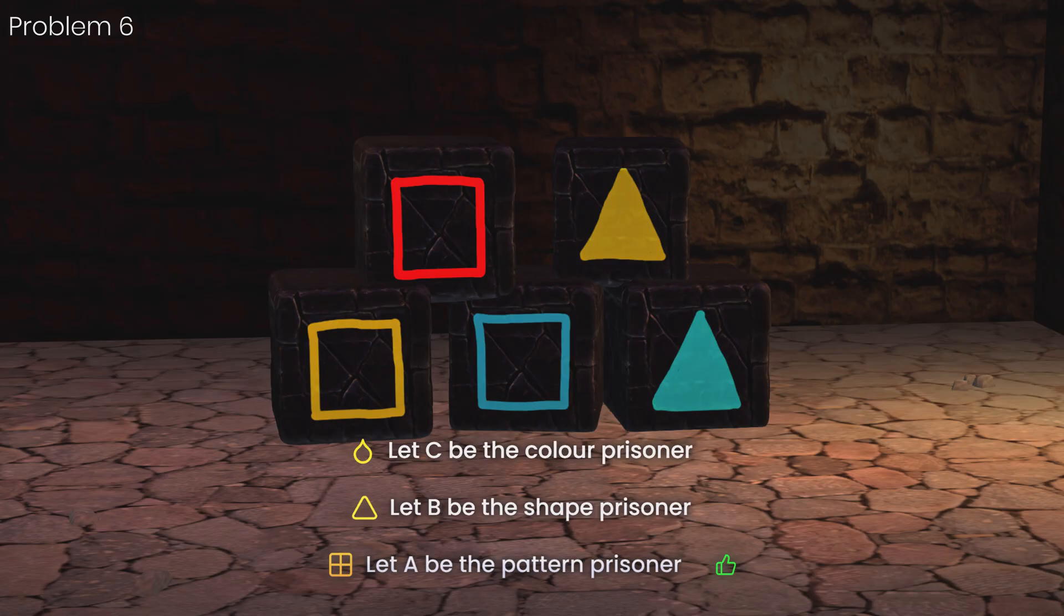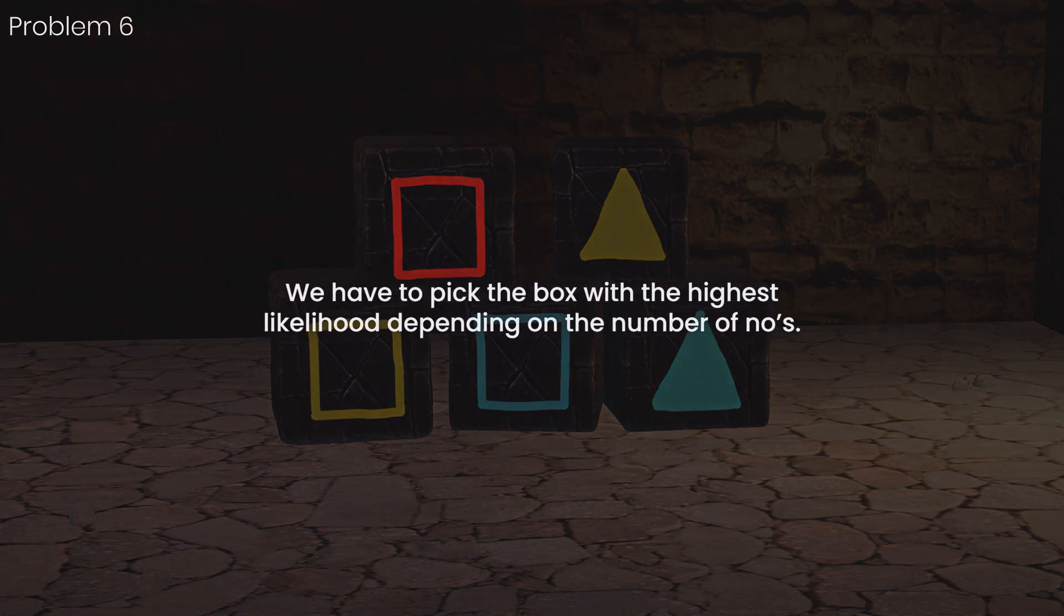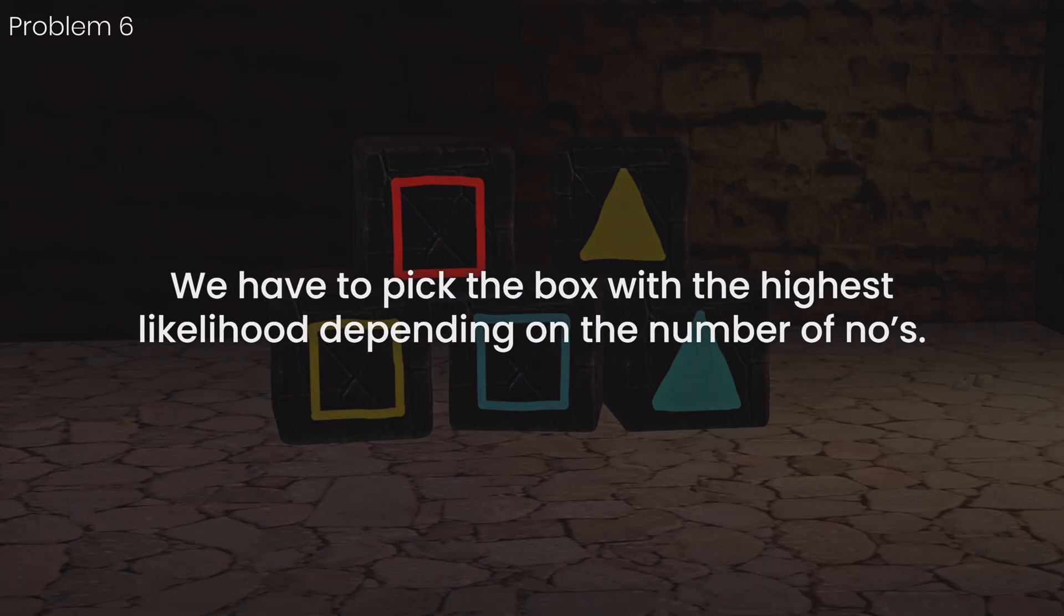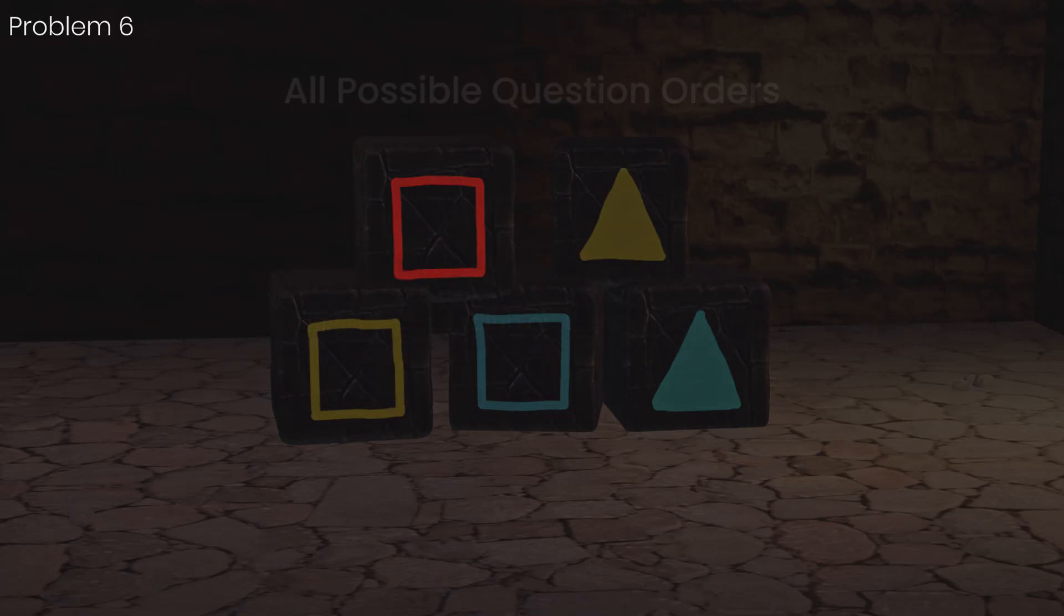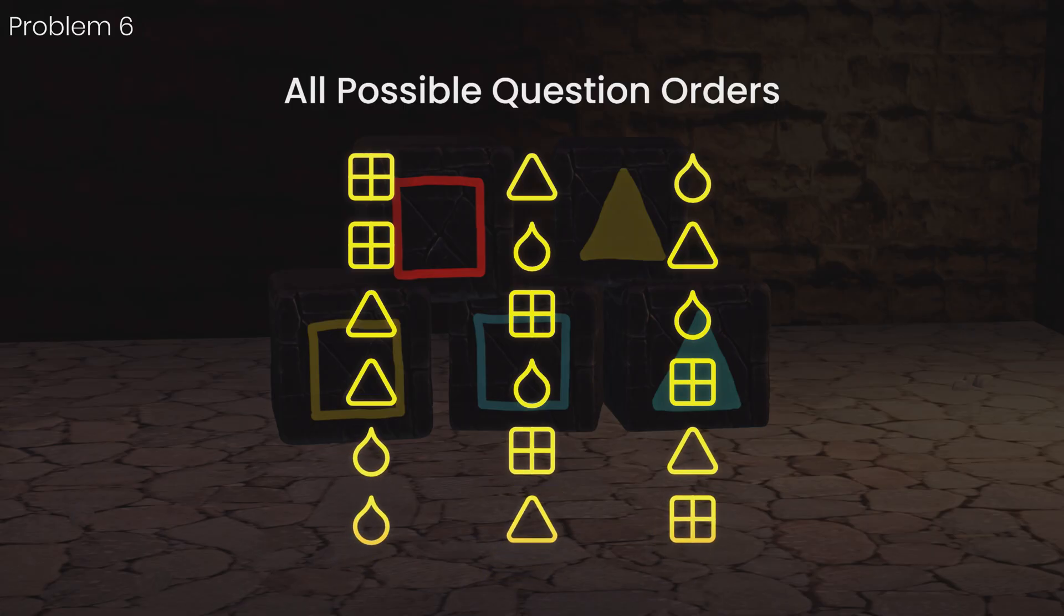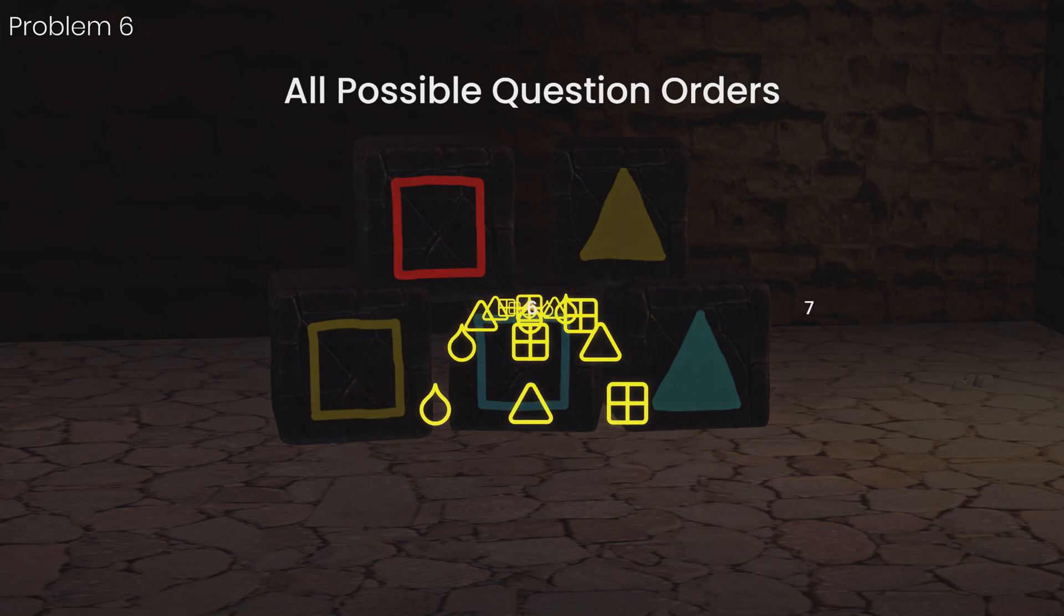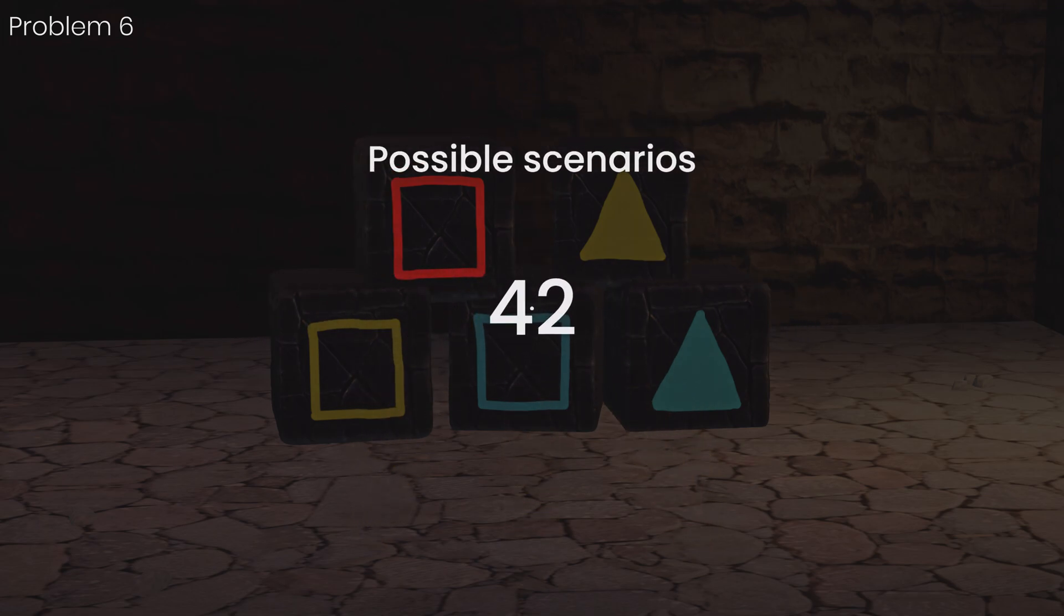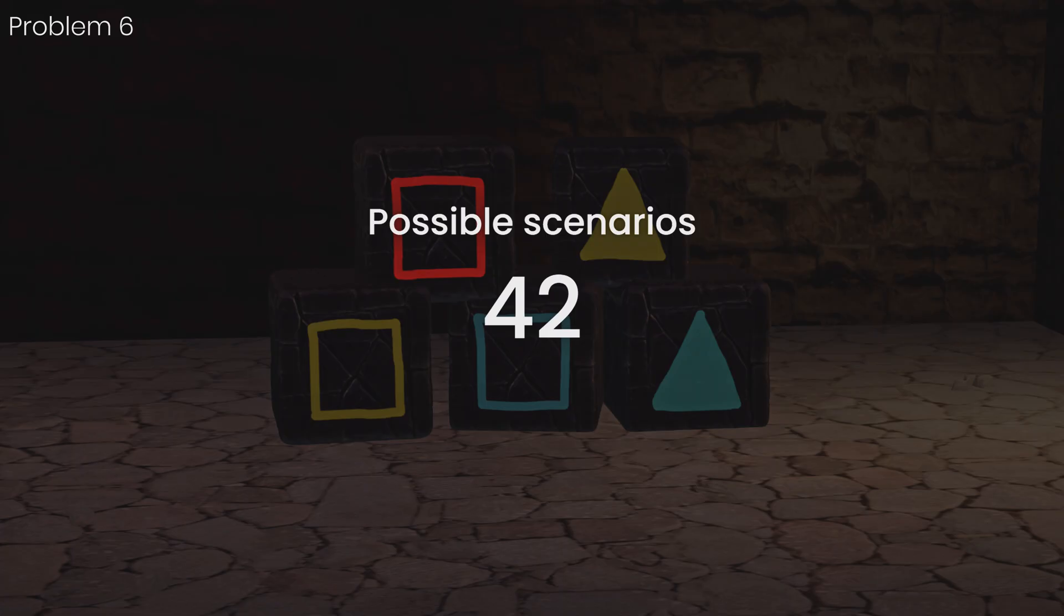However, having less knowledge than the prisoners means we have to pick the box with the highest likelihood depending on the number of no's. The independent variables at play are the boxes and the order you question the prisoners. The possible responses you get from the prisoners depend on the 42 possible scenarios created by the seven boxes and six permutations of prisoners.